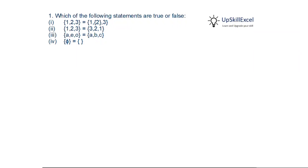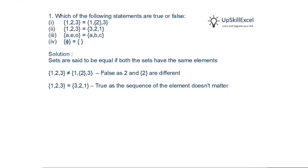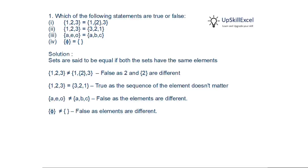Set comparison problem: which of the following statements are true or false? To check whether two sets are equal, we verify that all elements are the same in both sets. In the first case, there are three elements but the second element differs, so they are not equal. In the second case, elements are the same even in different sequence, so they are equal. In the third case, the alphabets differ, so they are not the same set. In the last case, phi and null are two different sets.